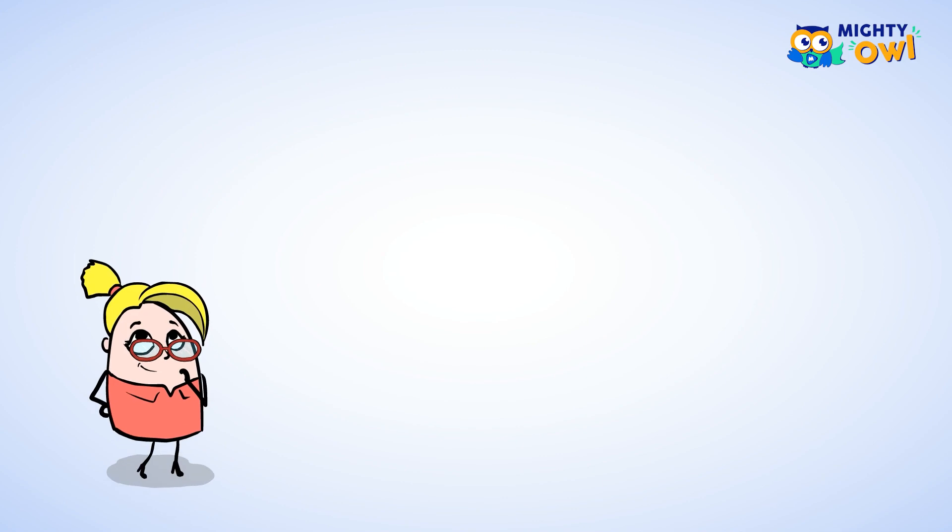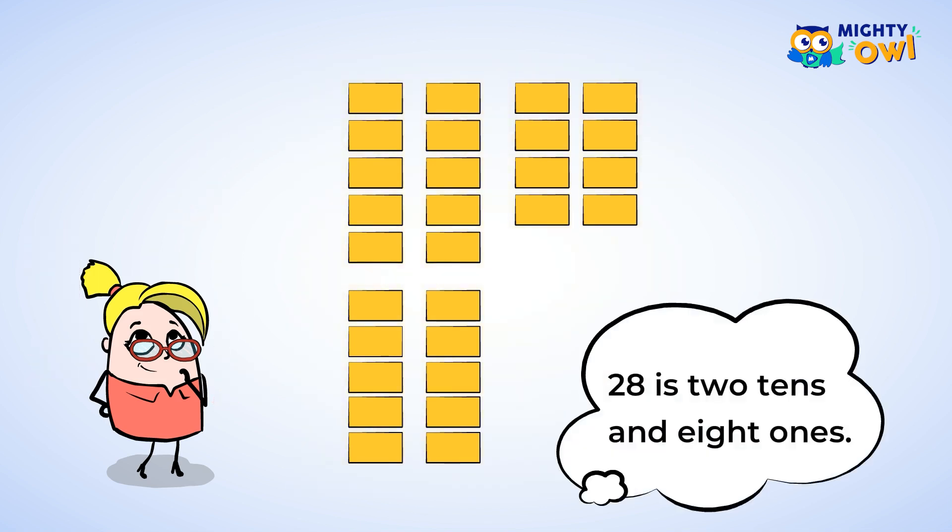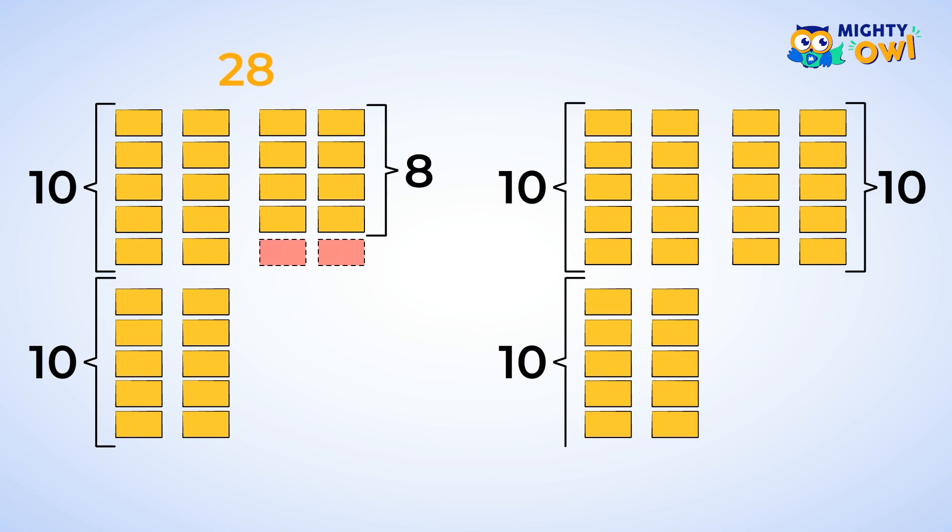Moving on. Imagine there are 28 children in your class. Now what about the number 28? Is it closer to 20 or to 30? Let's try rounding it and looking at the place values of the number. You can break the number 28 into two tens and eight ones. You can see that you only need two more ones in order to make another 10. Then we would have three tens total or 30. That is really close.